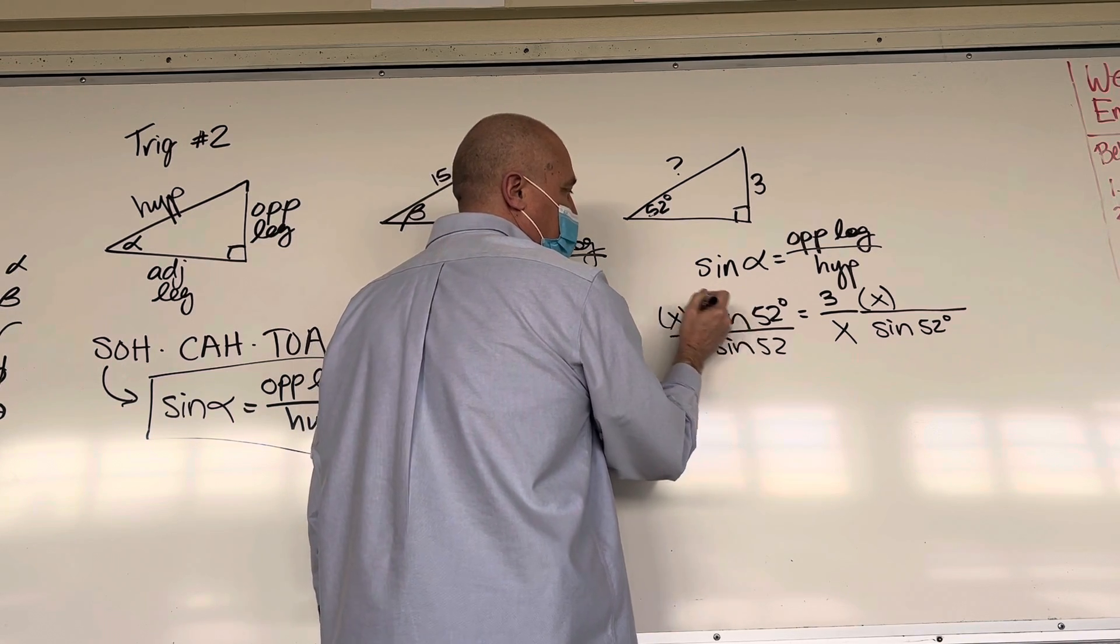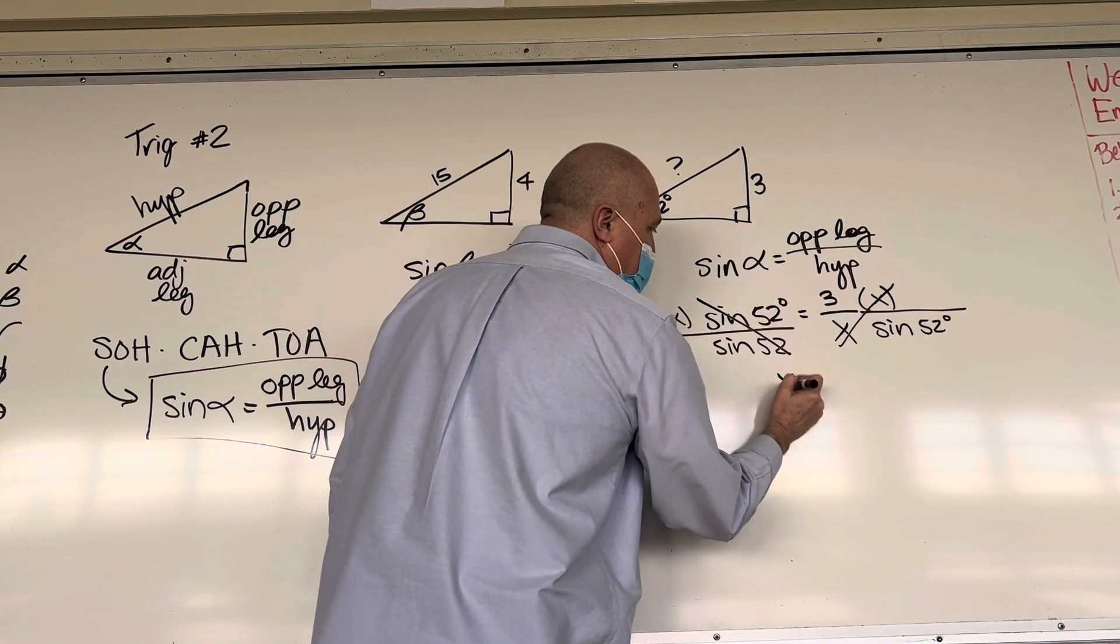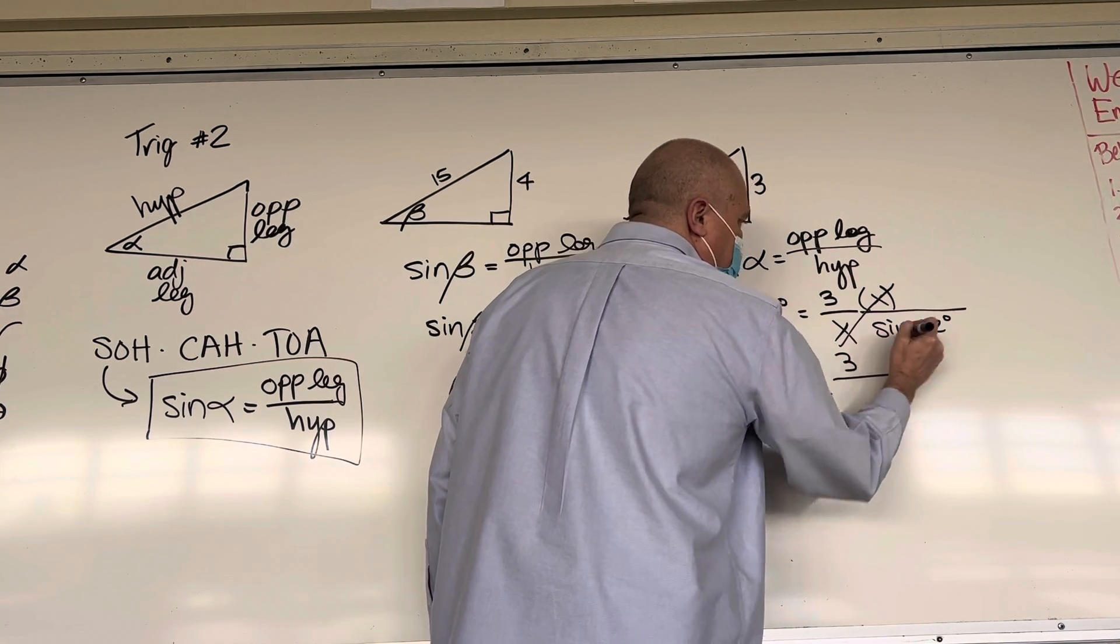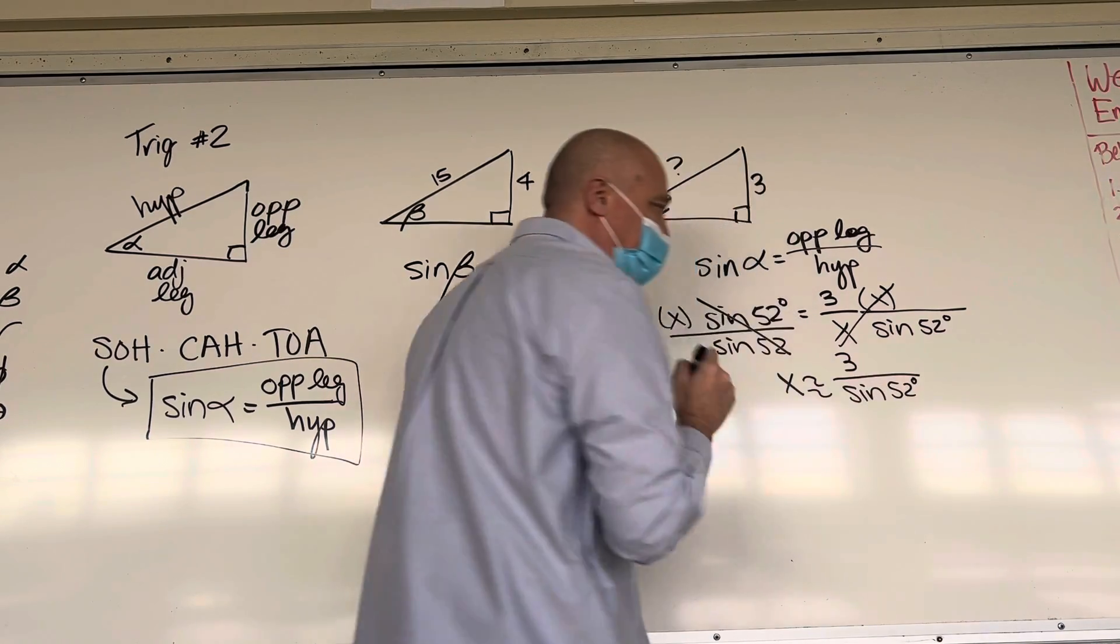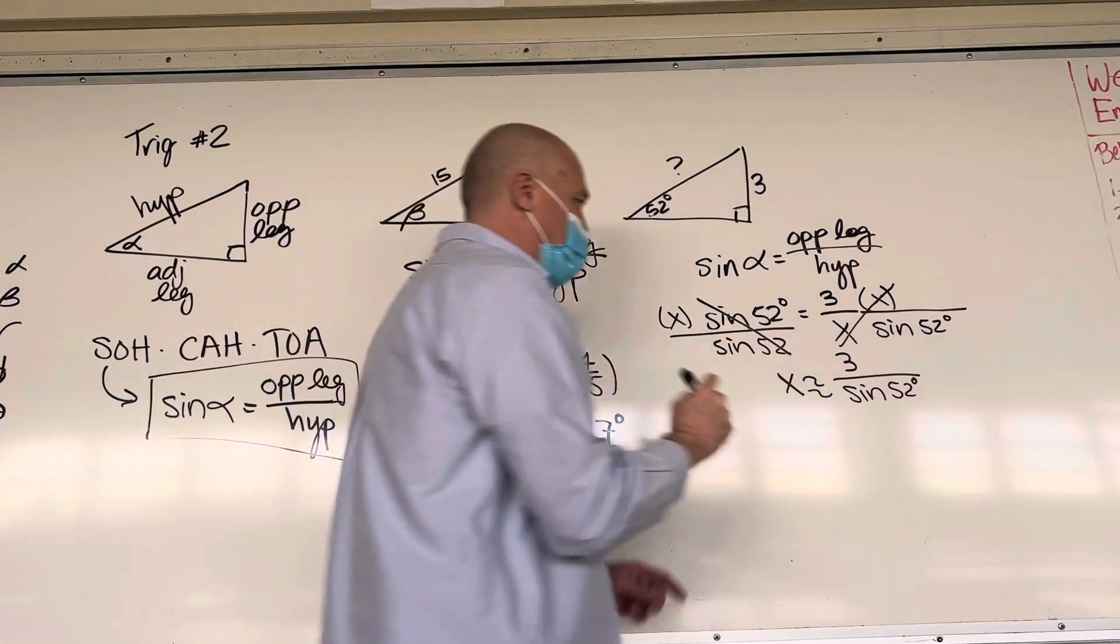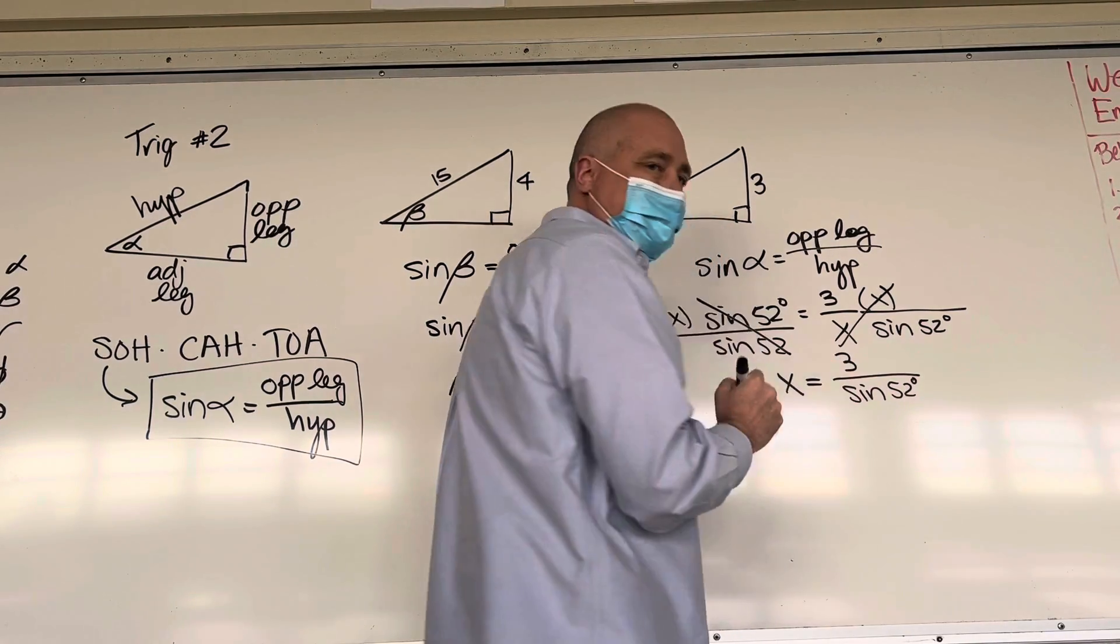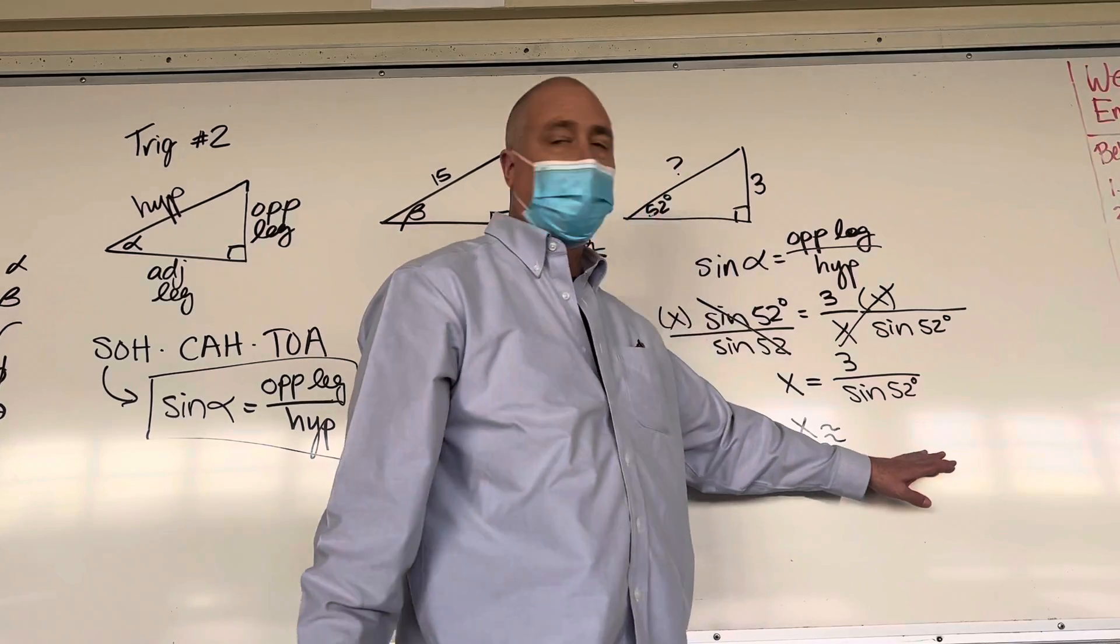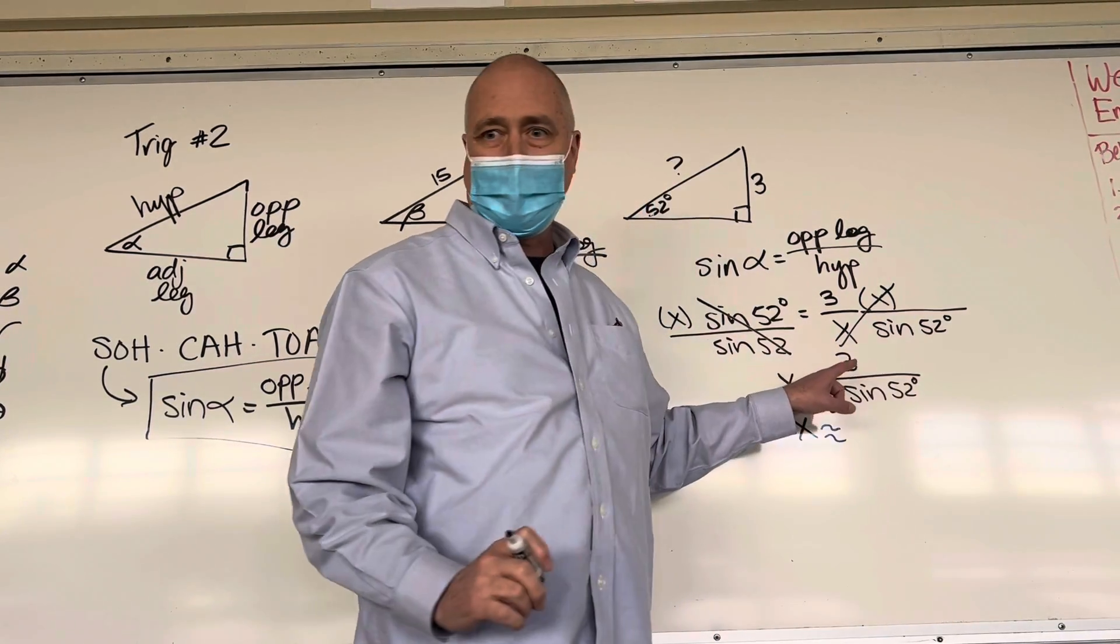And sine 52 is a single unit. It goes together. What we do to one side, we do to the other. Let's clean up the algebra. This is sine 52 over sine 52 is 1. So it's gone. X over x is 1. So it's gone. And we're left with x equals 3 divided by sine of 52 degrees. This is equal to because it's exact. Now we say it's approximately equal to because we're going to truncate some of those decimals. Use your calculator. See if you can do it.